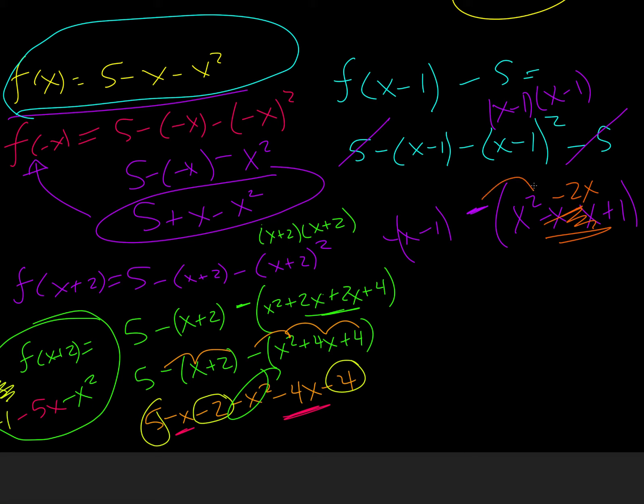And then distribute the negative. So negative x squared plus 2x minus 1. Distribute the negative here. Negative x plus 1. So we get negative x squared. This and this makes positive x. And then 1 and negative 1. That's it. And so this is equal to f of x minus 1 minus 5.